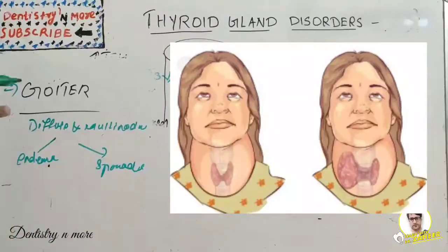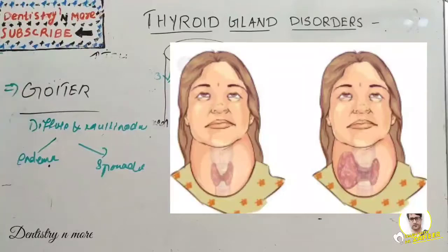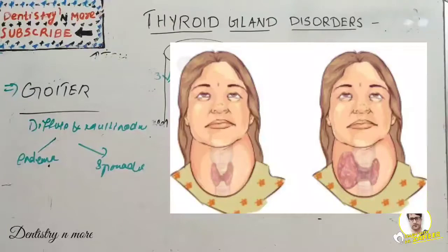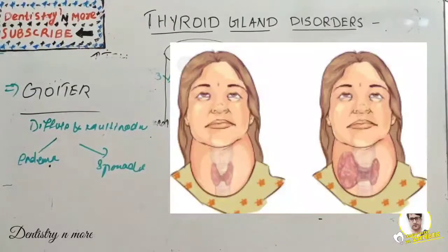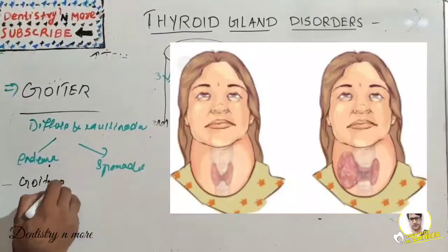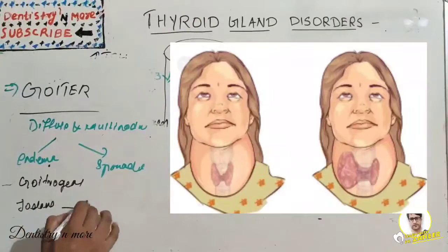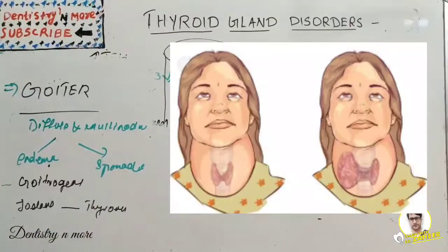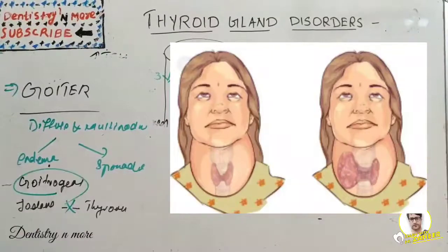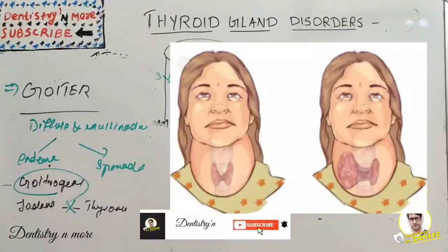Endemic goiter is endemic to certain geographic areas such as the Himalayas and Alps, where there is a deficiency of iodine. It can also result from ingestion of goitrogens such as cabbage, cauliflower, Brussels sprouts, and turnips, which prevent the incorporation of iodine with tyrosine — a basic step of iodine uptake.